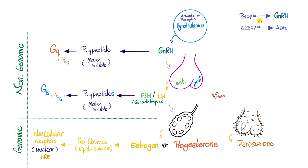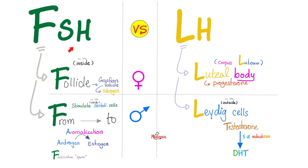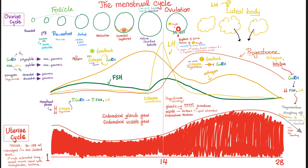The hypothalamus secretes GnRH, which goes to the anterior pituitary and tells it to make FSH and LH, which stimulates the ovary to make estrogen and progesterone from the granulosa cells. The follicle stimulating hormone stimulates follicle growth, which makes estrogen. The luteinizing hormone causes ovulation, and the remaining follicle becomes the corpus luteum, which secretes mainly progesterone. The first half of the cycle belongs to FSH; the second half to LH.